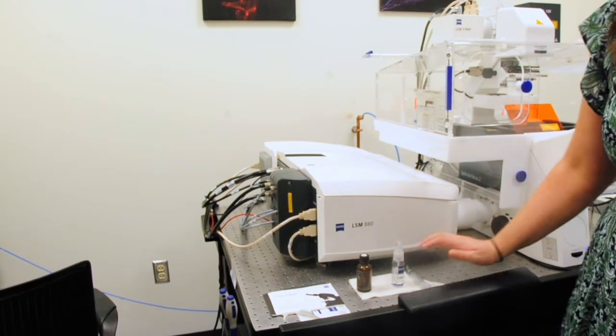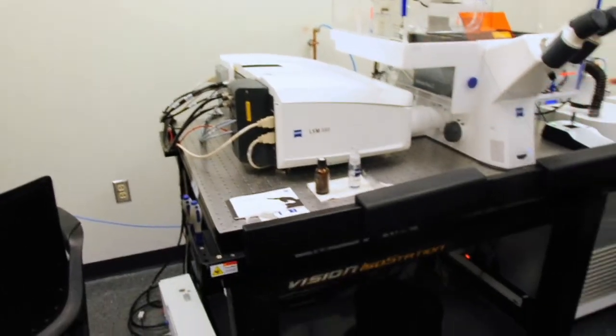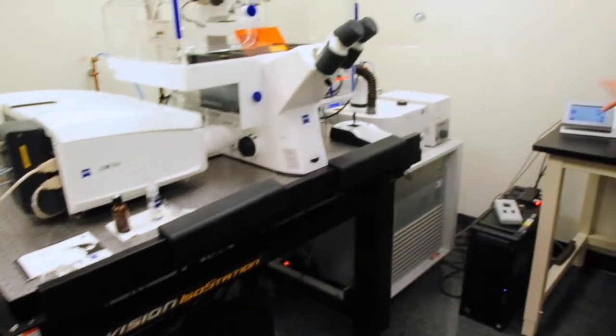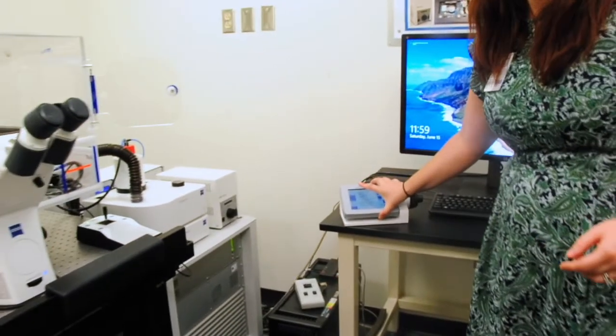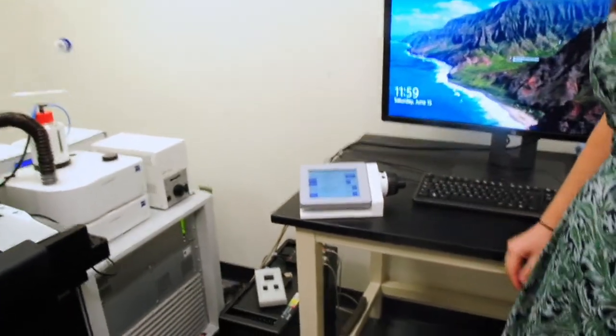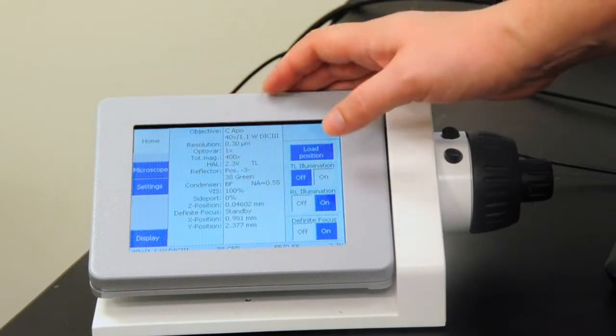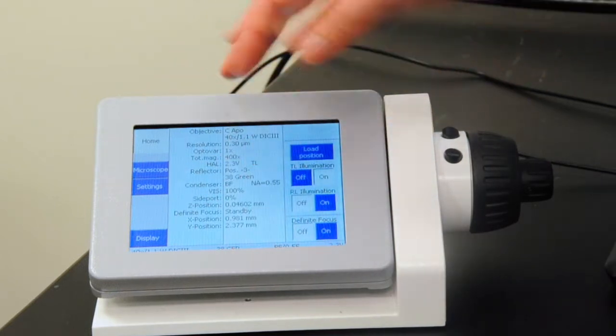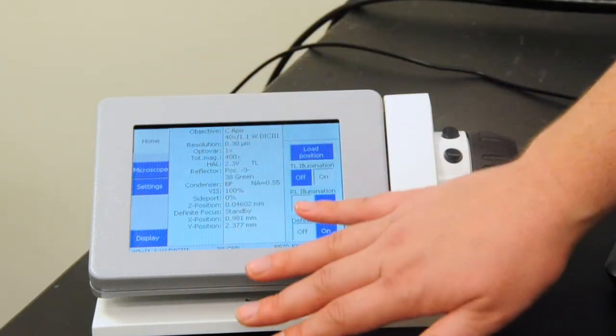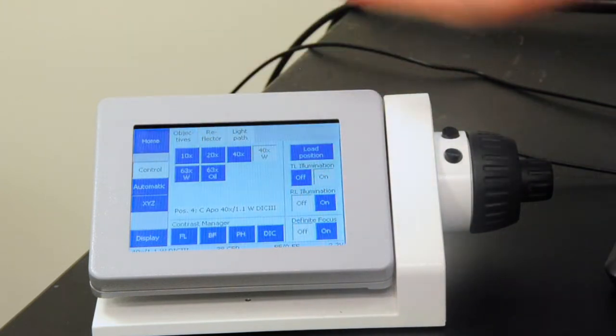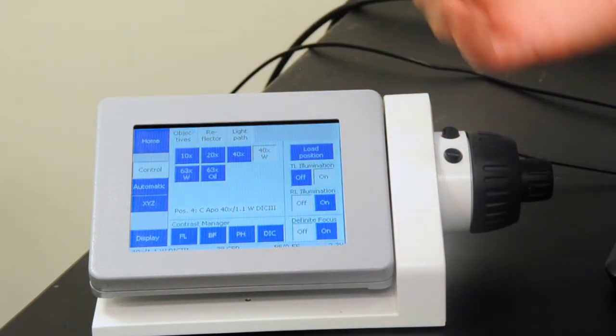And finally, if we come over here past the air table, we have a touchscreen system. Most modern microscopes will have these these days. Here we have our touchscreen that controls all the motorized parts of our microscope. In the home screen, it tells us different things about the objectives. And then we press microscope, and this is where we actually control the microscope.